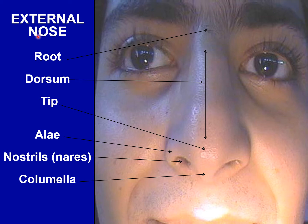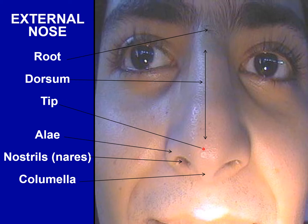The external nose is a pyramidal projection in the middle of the face. It has a root or bridge forming the upper narrow part, continuous with the forehead. The tip or apex is at the lower end. In between lies the dorsum, a rounded border where the sides of the nose meet. Two piriform apertures at the broad lower end are known as the nostrils or nares. The lower flattened parts on the sides are called the alae of the nose.